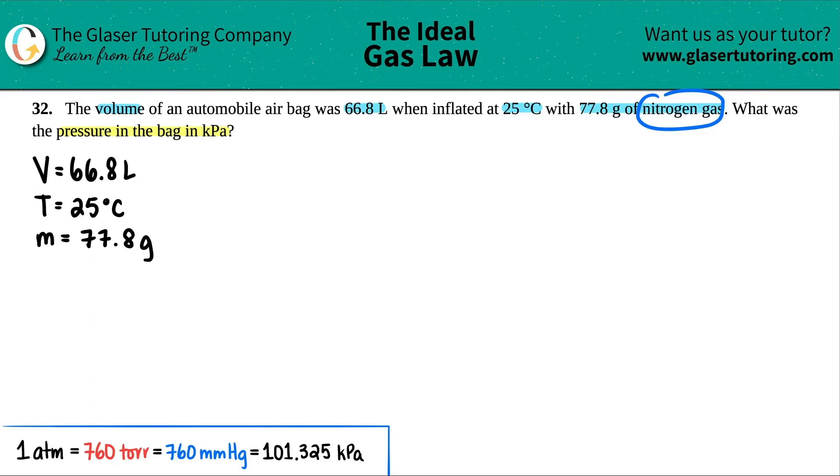So my mass is 77.8 grams. But now, remember guys, nitrogen gas. How would we write this down? Would we just write N? Not really. Remember, nitrogen gas, nitrogen is a diatomic. We learned this all the way back. We got to remember those diatomics. So nitrogen is part of your diatomics. So this would be N2. And now they're asking for the pressure. So I'm just going to say P equals question mark. And they want it specifically in kilopascals.